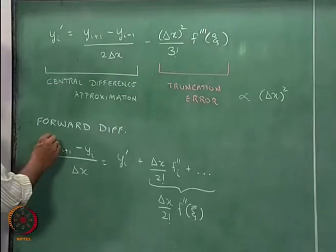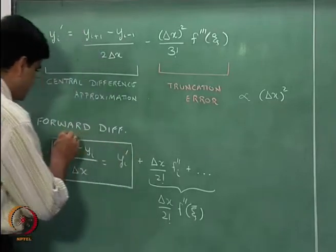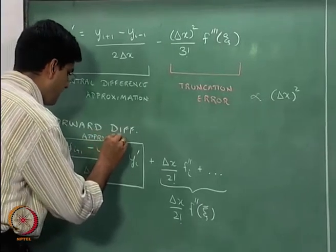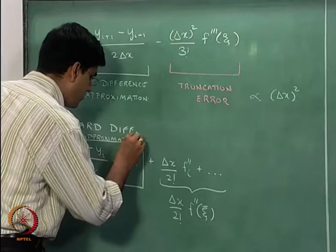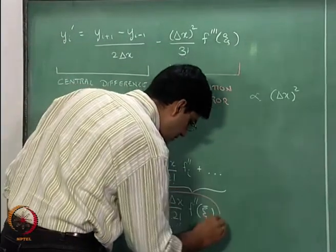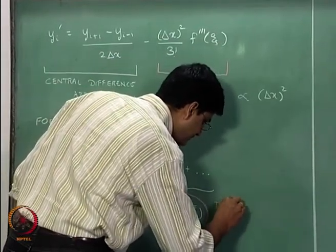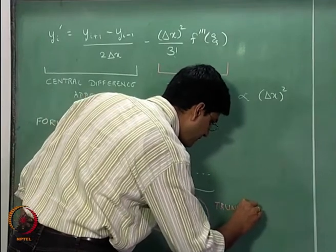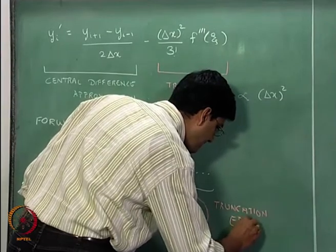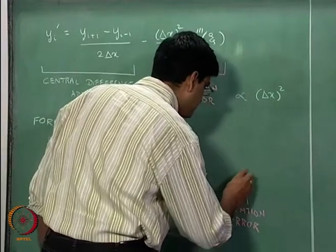So in this particular case, this becomes our forward difference approximation, and the truncation error in the forward difference approximation is proportional to delta x.